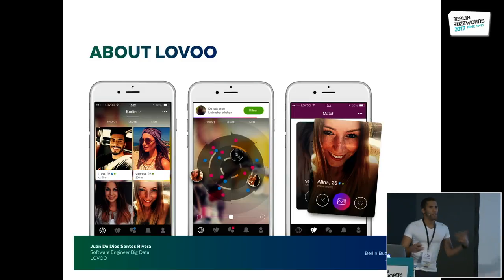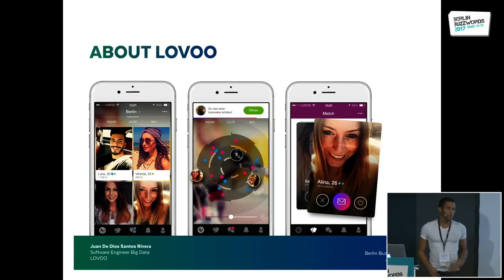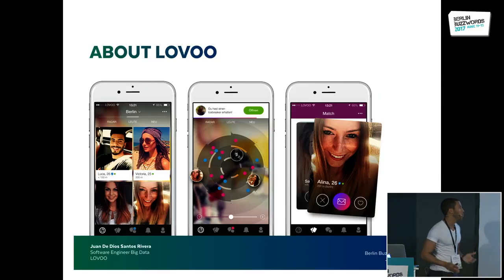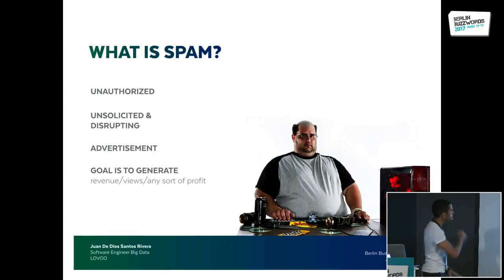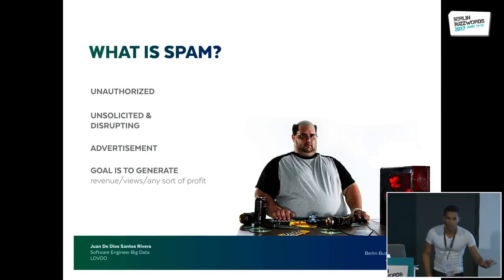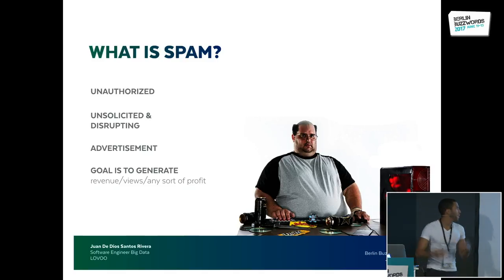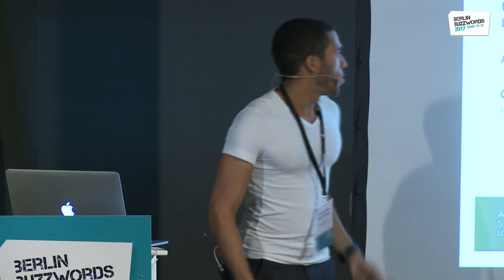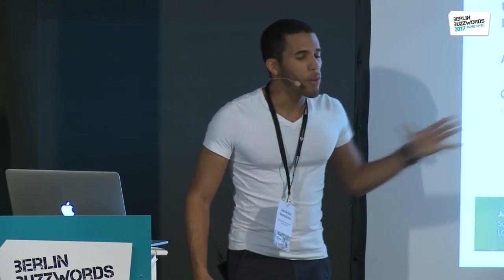Before starting — what is Laboo? Laboo is a dating app, meaning that we have a bunch of pretty people that are flirting with each other, hunting for each other, and most importantly, trying to find that sweet love that we all like and adore. So what is spam? I like to define spam as the unauthorized use of a system or platform to send, display, or communicate unsolicited and disrupting content that usually comes in the form of advertisement, with the goal of generating revenues, views, or any sort of profit.